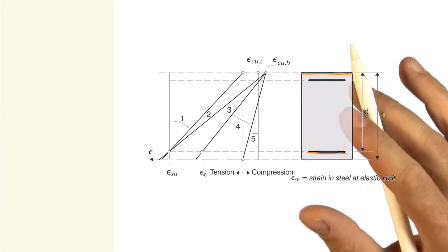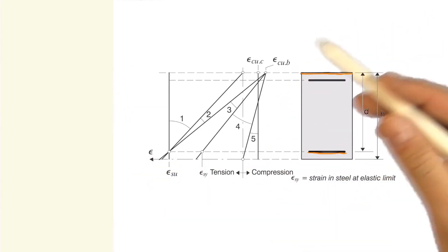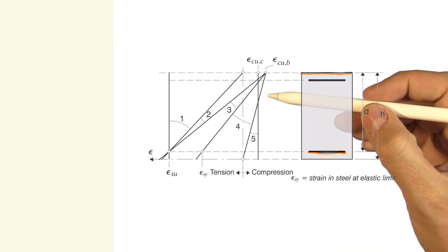As we already know, these values depend on whether we're contemplating simple tension, bending, compression, etc. And this is how we will create a classic deformation domains diagram or pivot diagram for reinforced concrete sections.